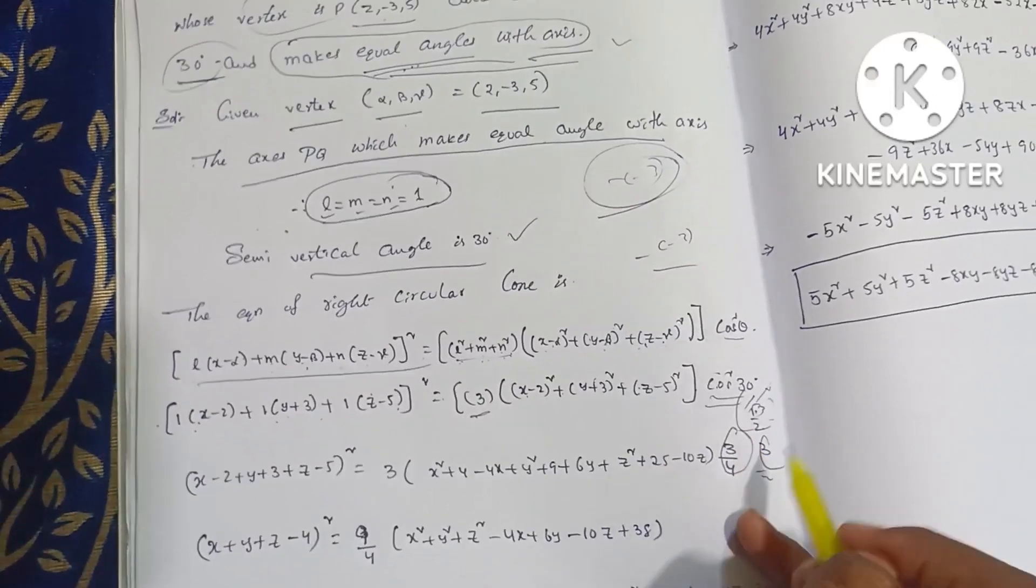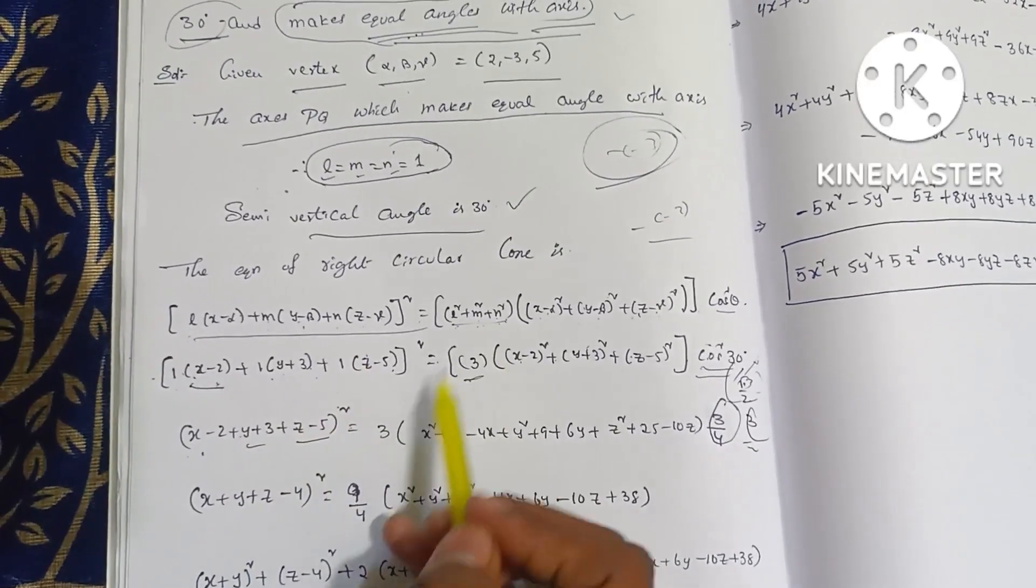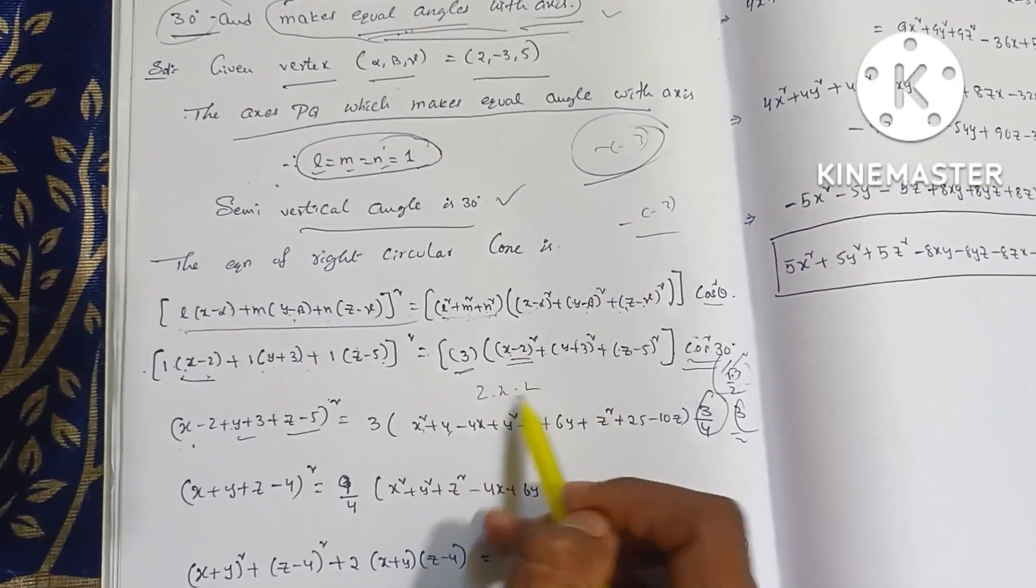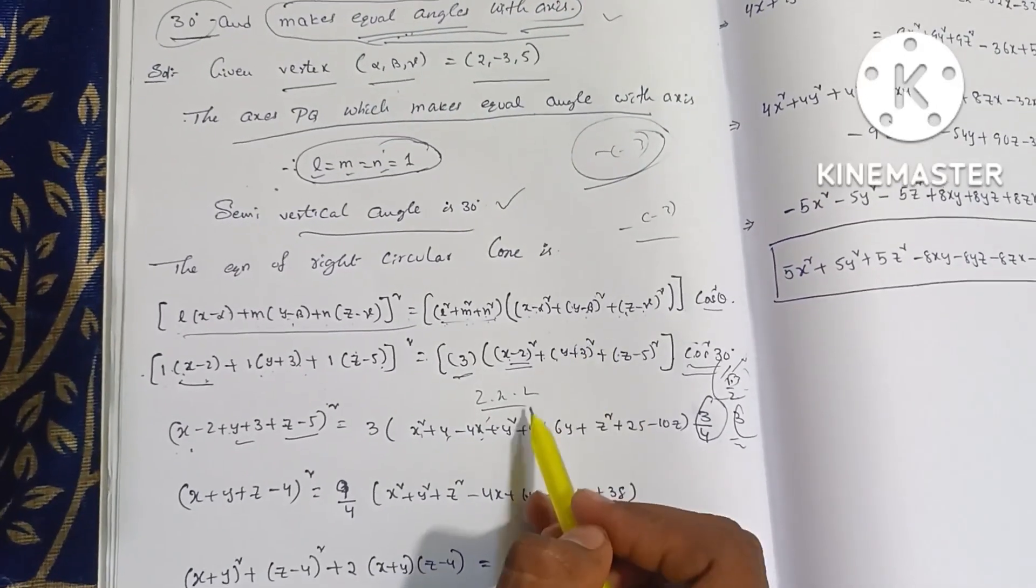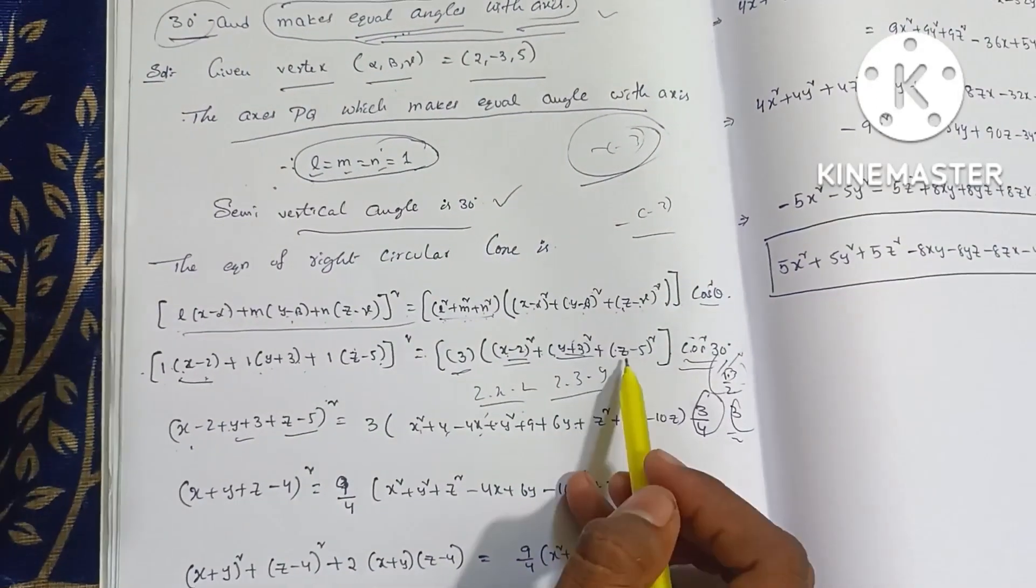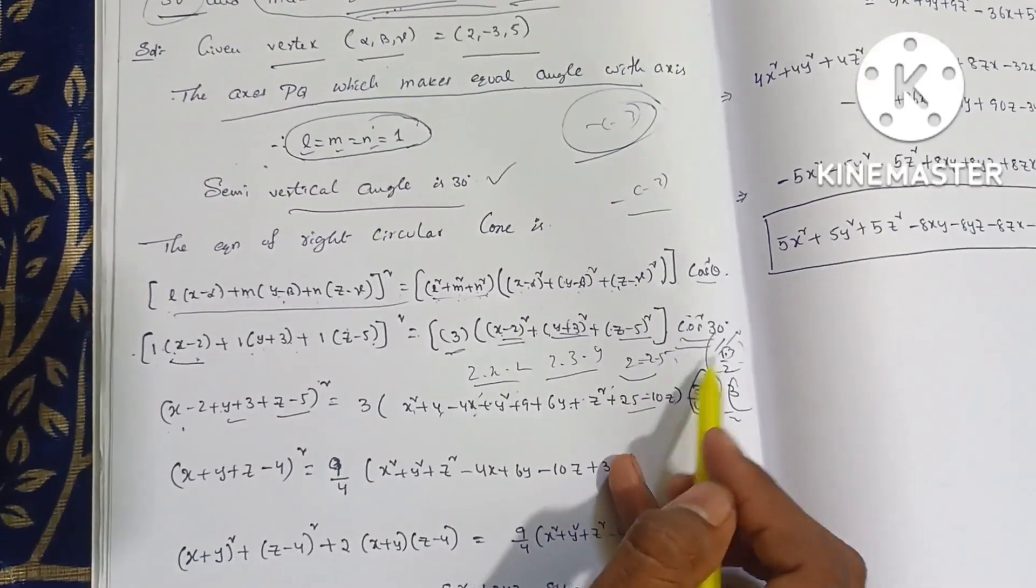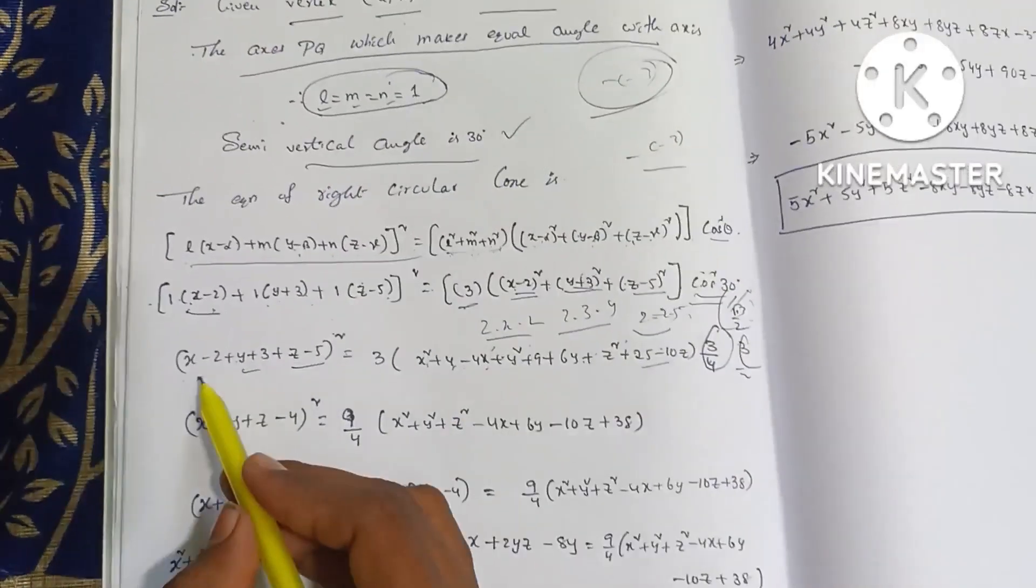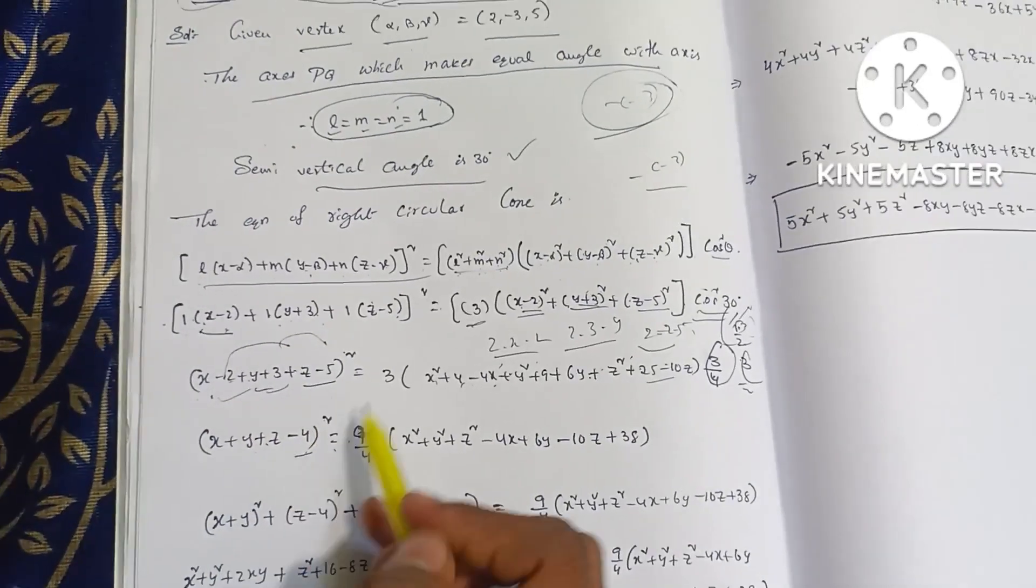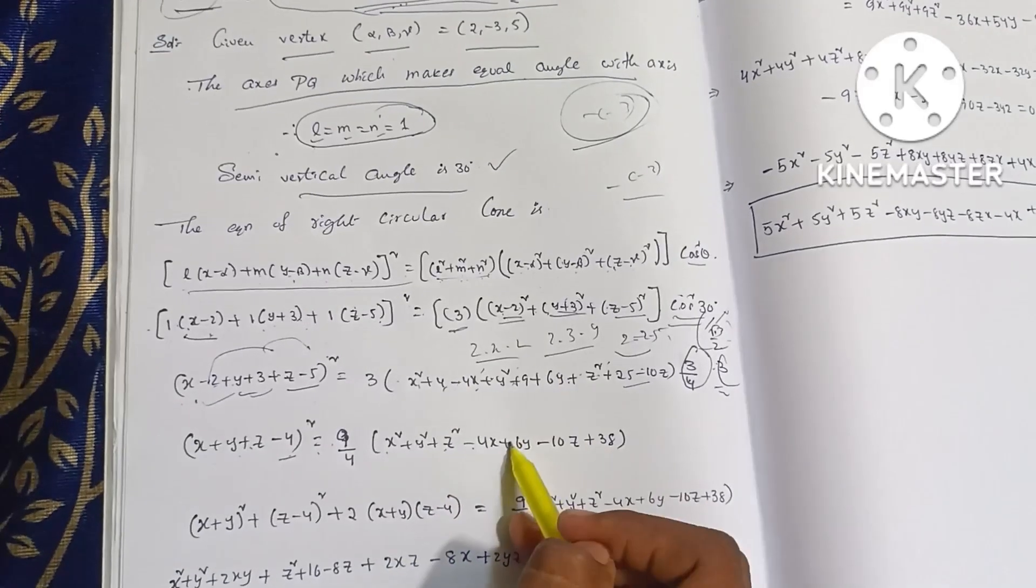So 1 into x minus 2, x minus 2 plus 1 into y plus 3 z minus 5 whole square is equal to 3 into. So x square plus 2 square into 4 minus 2 into x into 2 and 4x. Plus y square plus 9, plus 2 into 3 into y, 6y. Plus z square plus 5 square into 25 minus 2 into z into 5, and 10z into 3 by 4. And 9 by 4 into x square plus y square plus z square.